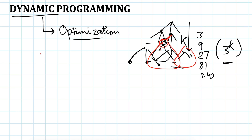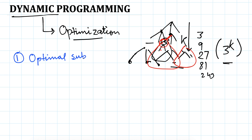I will give another brief example which will make this very clear. A problem must have two properties for us to be able to apply dynamic programming. The first one is the optimal substructure property.